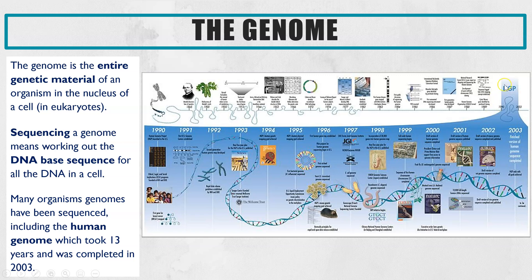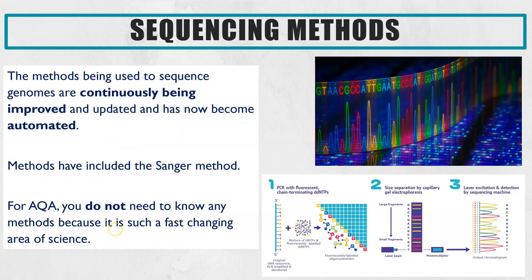Many organisms' genomes have already been sequenced. Here in this image is an example: the human genome. HGP is the Human Genome Project, and as you can see they started it in 1990 and 13 years later they finally completed it in 2003. So the entire DNA base sequence of a human has been identified.